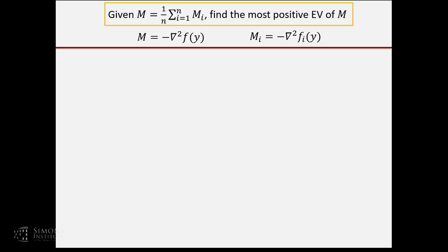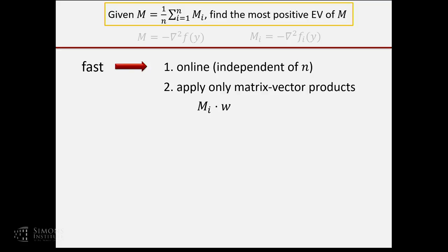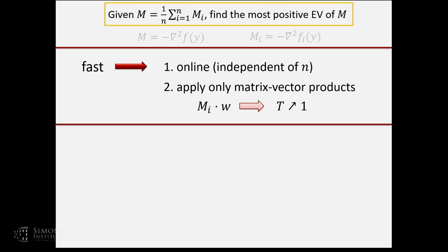We want to find the most positive eigenvalue as fast as possible — online, meaning independent of the number of pieces, and supporting only matrix-vector products. Whenever I compute Mi times an arbitrary vector w, I increase the complexity T by one. T counts matrix-vector products with respect to Mi's. I wish to construct an algorithm with the smallest T as a function of the approximation error.